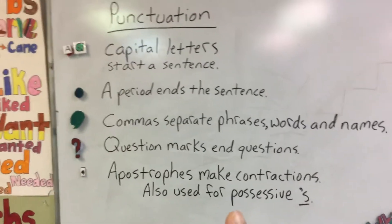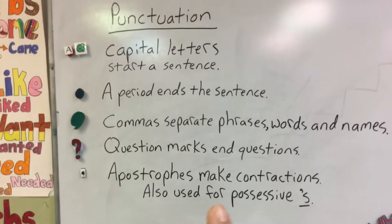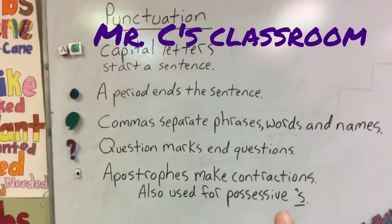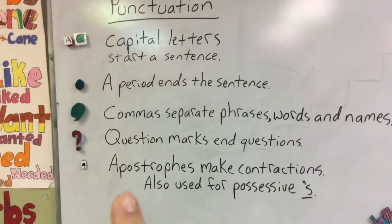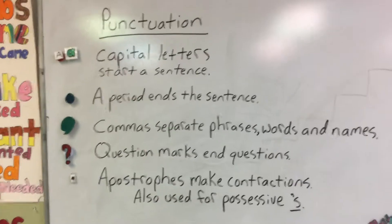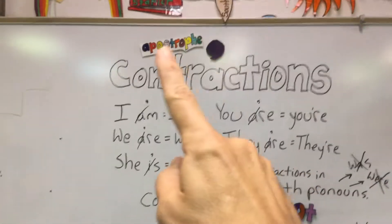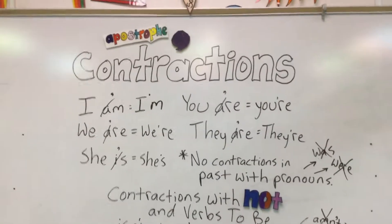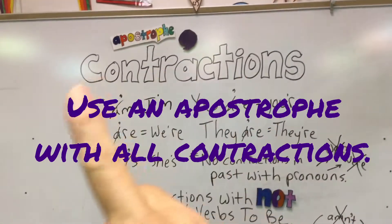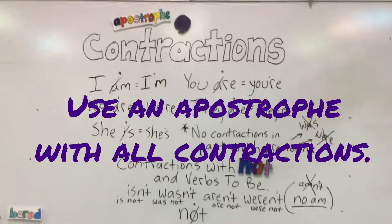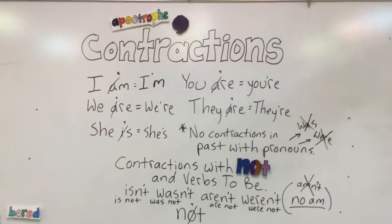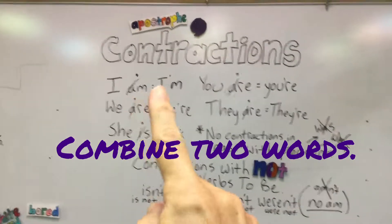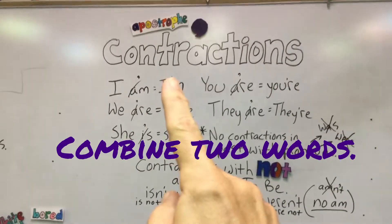Apostrophes make contractions. They're also used for possessive apostrophe S — if you say it's Mr. C's classroom, you would say apostrophe S. But we often use apostrophes for contractions. Let's go over here to contractions. Let's start with simple contractions first. We have the verb to be, which we studied in the last lesson. Now when we combine pronouns and verb to be, we're going to have a contraction with an apostrophe.